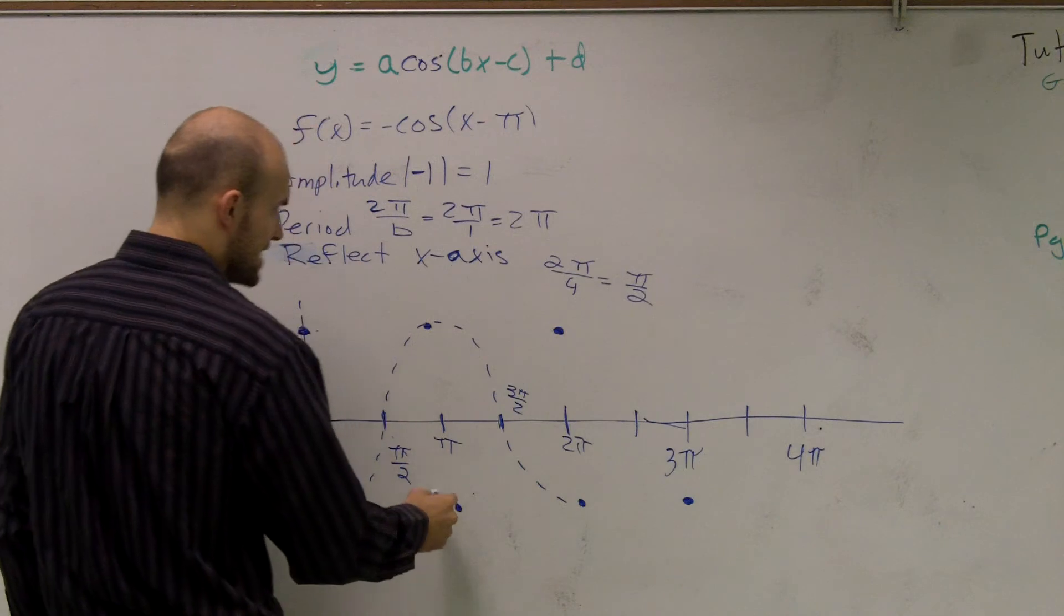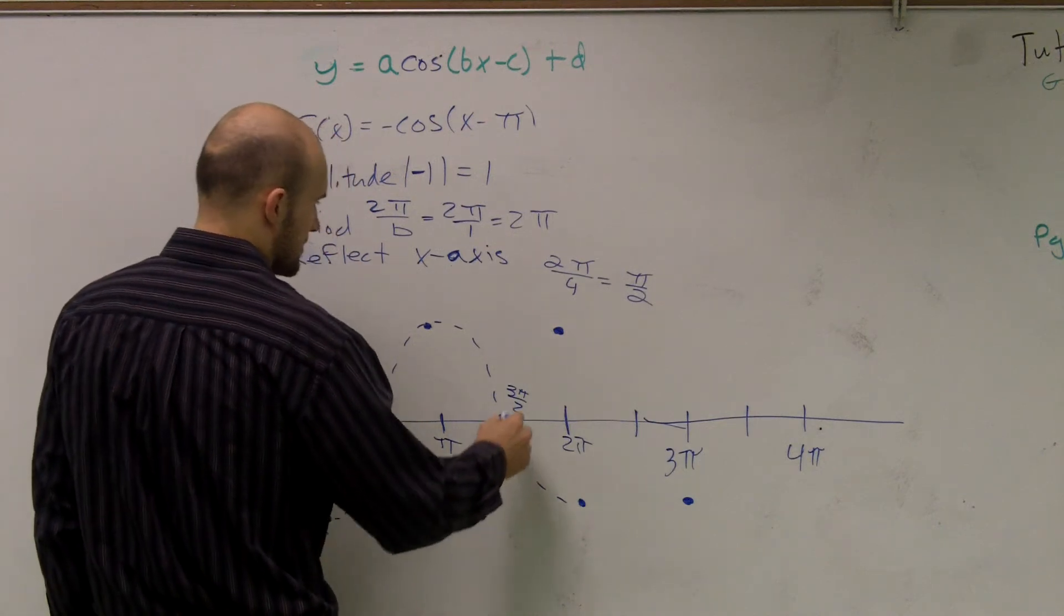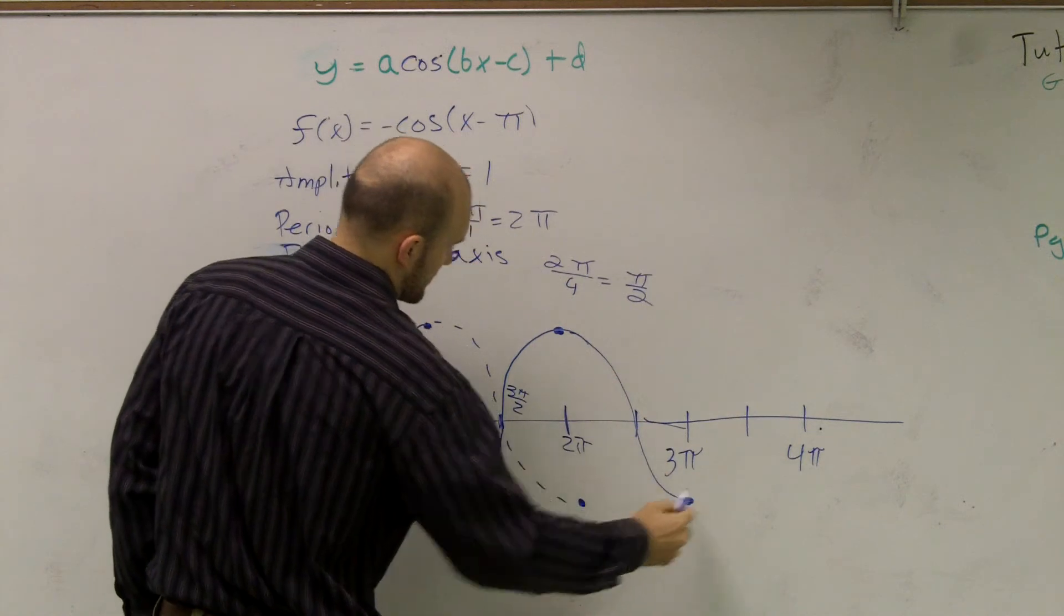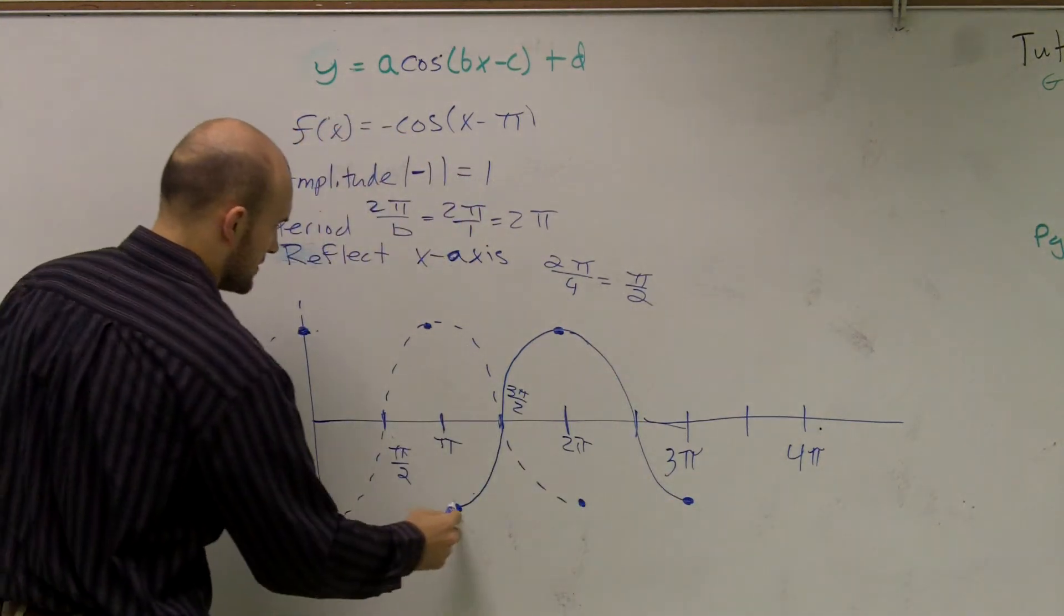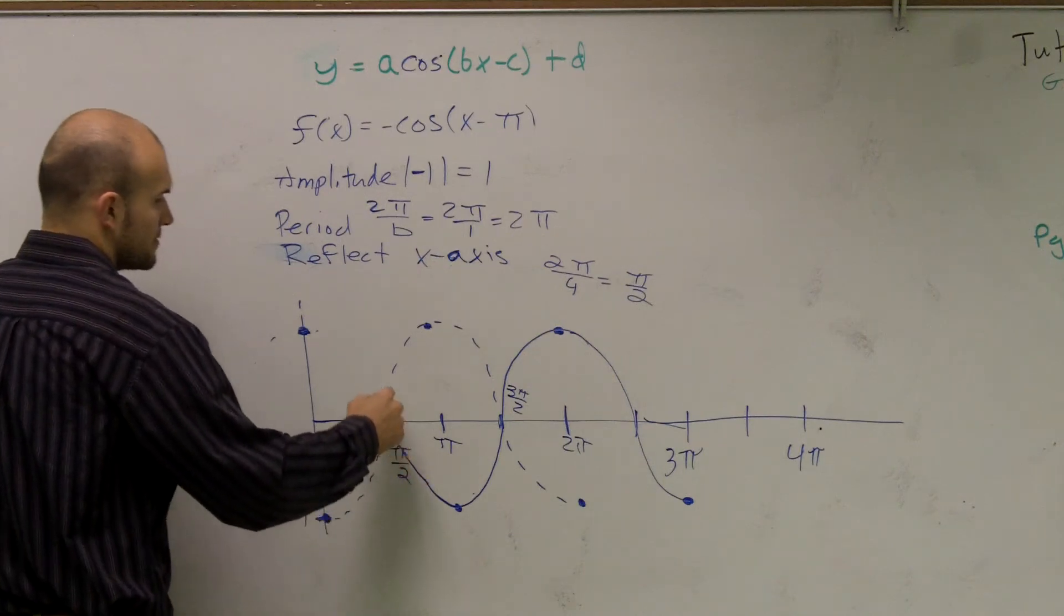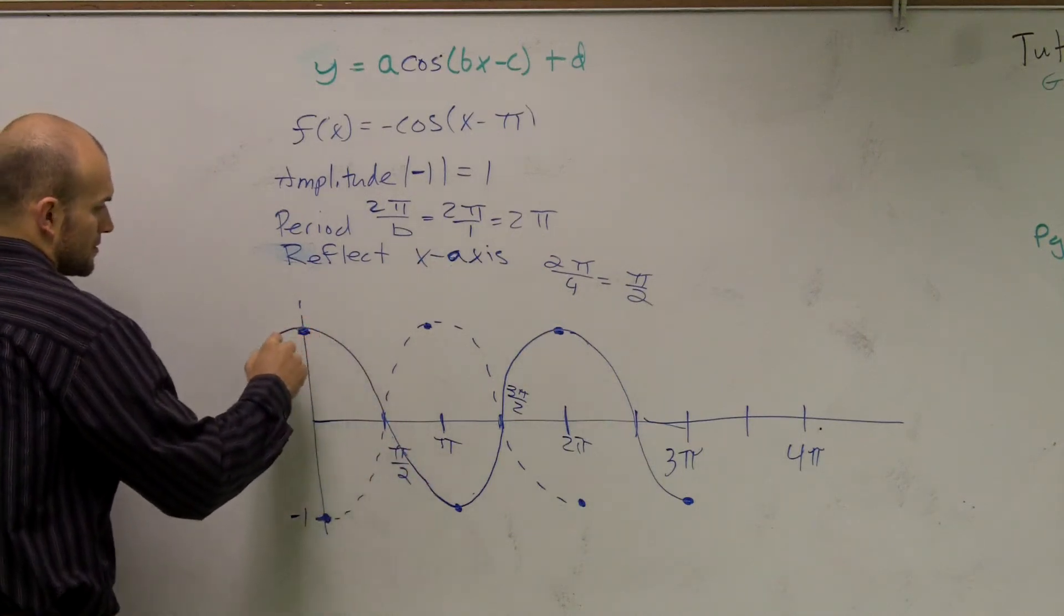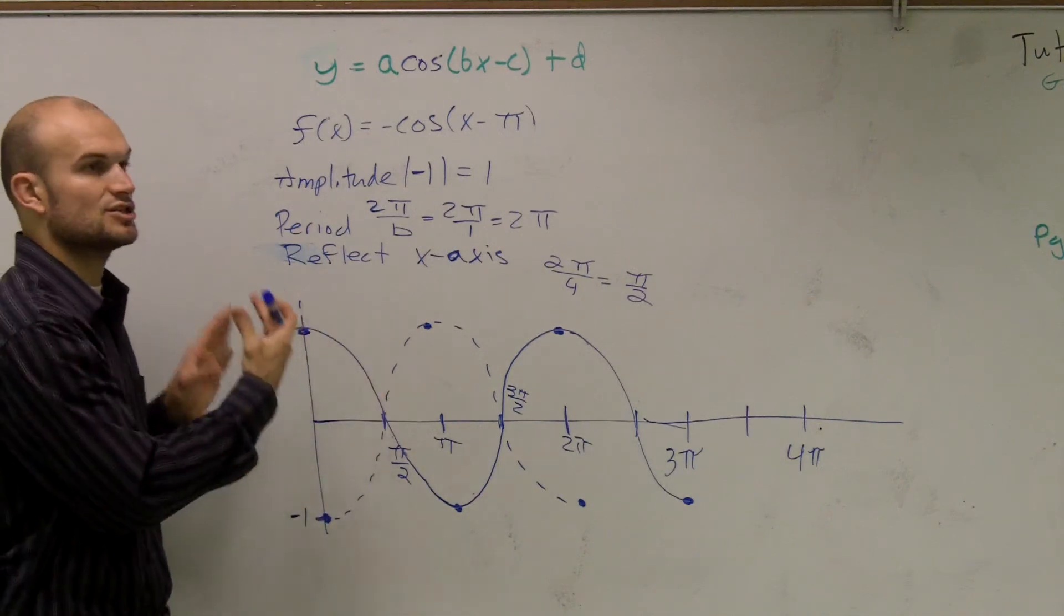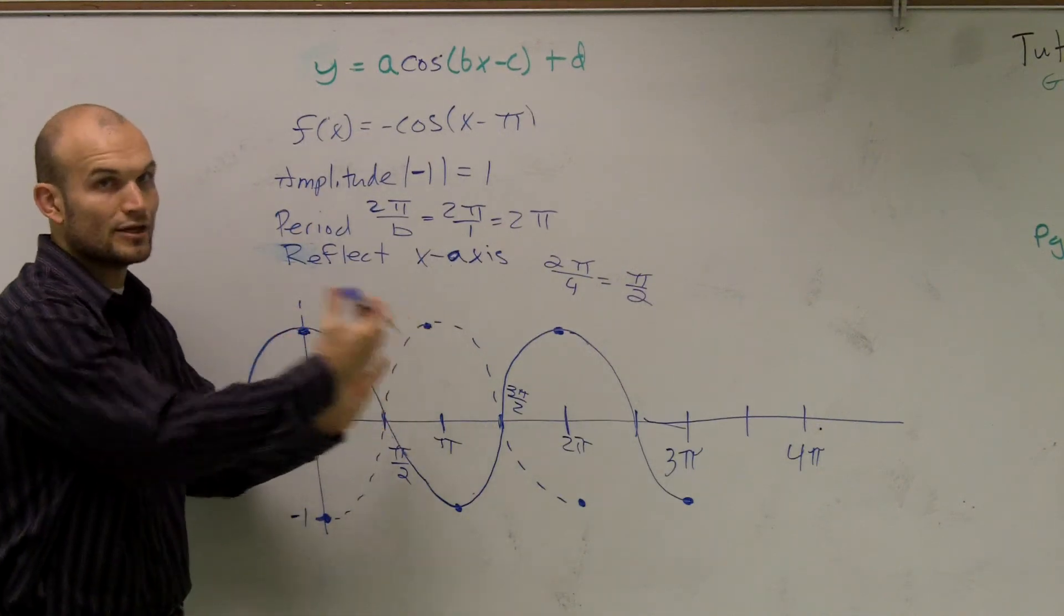So this is now going to look something like that. And then this will come up. And remember it says to graph in two periods, right? So what you guys notice is it's pretty much the exact same graph. All it is is just being shifted π units to the right.